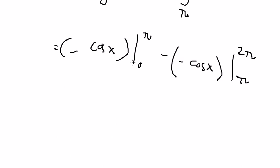So we put the negative sign. So we put π in here and 0 in here. So you got negative cos π, plus cos 0.